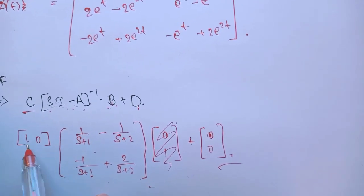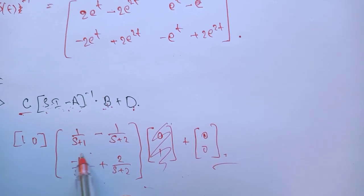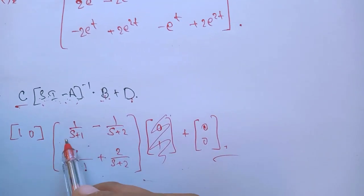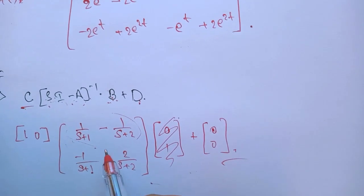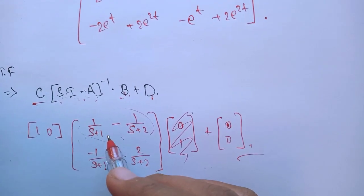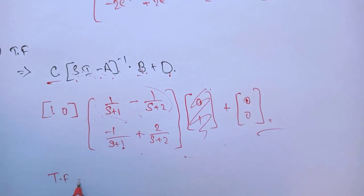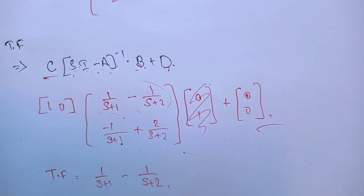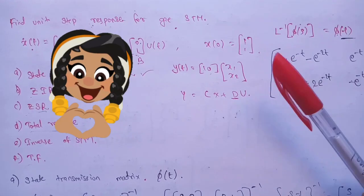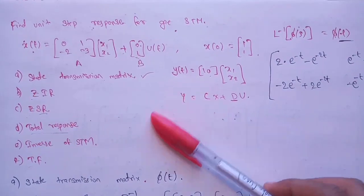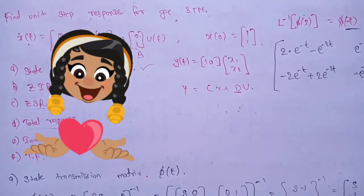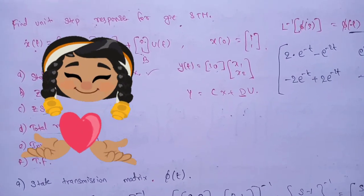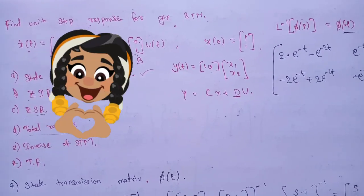Multiplying the row C = [1, 0] with the (sI − A)^(−1)B column, only the first element survives and the rest vanish. The transfer function of the system is therefore 1/(s+1) − 1/(s+2). By solving just one question we have learned state transmission matrix, zero input response, zero state response, inverse of the state transmission matrix, and transfer function. If you understood everything, please like and subscribe.